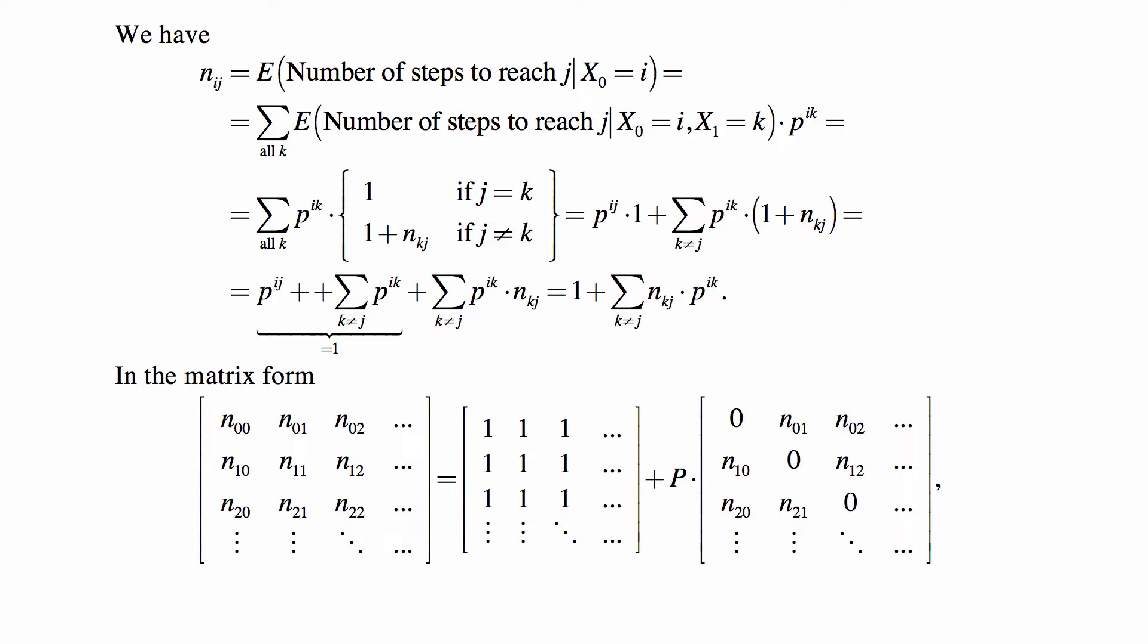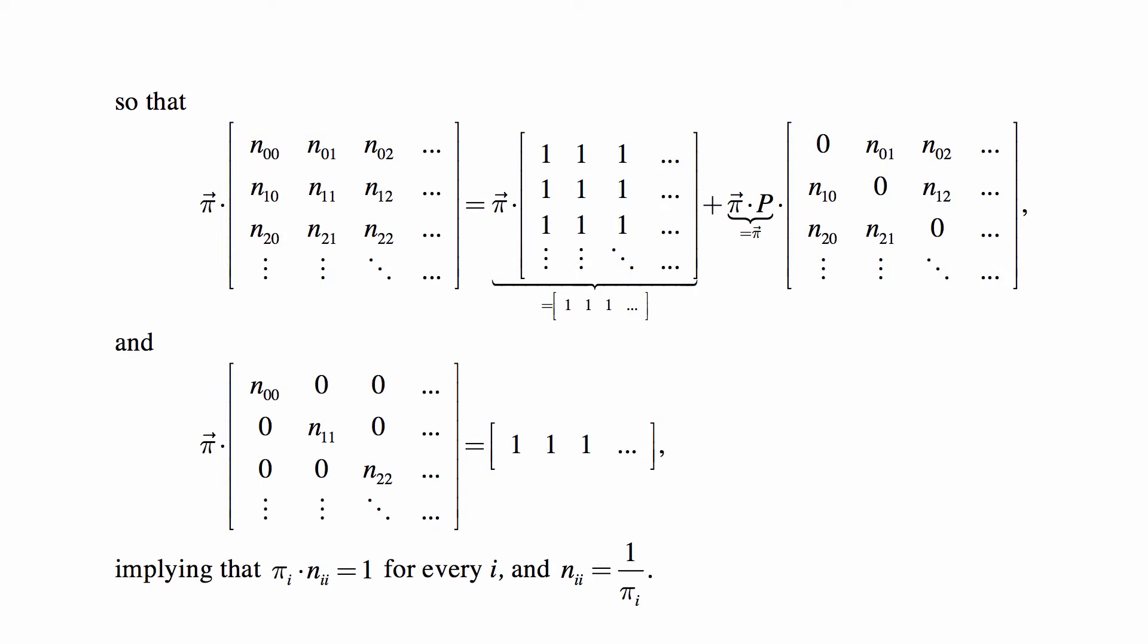So we can actually write this out in matrix form, that every single Nij can be written like this. So the matrix of all possible Nij can be written as the matrix of ones plus the transition matrix P, multiplied out by this matrix of Nijs except with the diagonal zeroed out. The terms on the diagonal are replaced by zeros because you see that the summation is over k not equal to j.